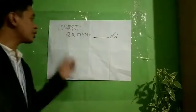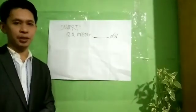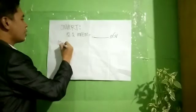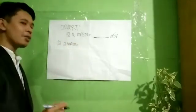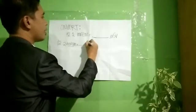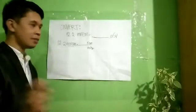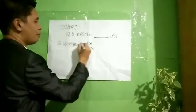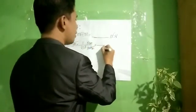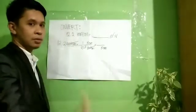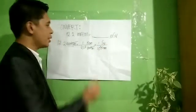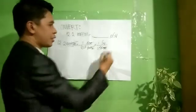For Exercise 2, we convert 12.2 millirem into microsieverts — from traditional going to SI. Copy the given: 12.2 millirem. Copy the unit as denominator: millirem. Convert to rem: for every 1 rem, there are 1000 millirem. Cancel millirem, leaving rem. Then convert from rem to sieverts: for every 1 sievert, there are 100 rem. Cancel rem; what remains is sievert.